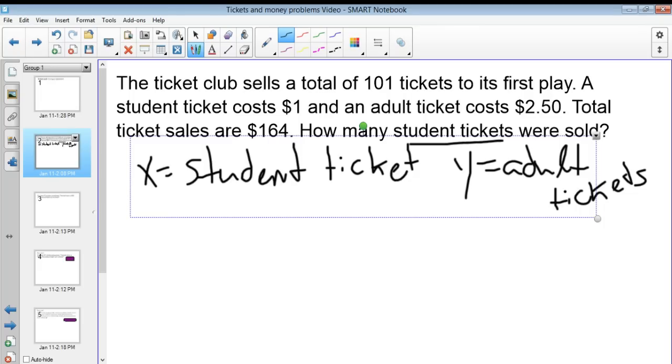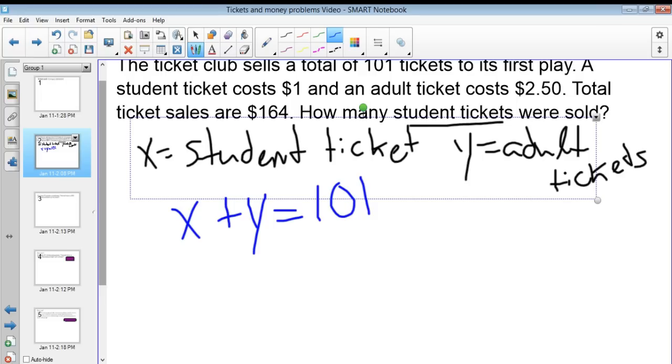We are told that 101 tickets were sold in total for this first play. That means the amount of student tickets plus adult tickets has to be equal to 101 because that's how many total tickets were sold. We are also told that a student ticket costs $1 per ticket and adults cost $2.50 per ticket, and that the total sales of this was $164.